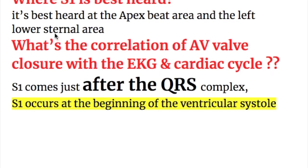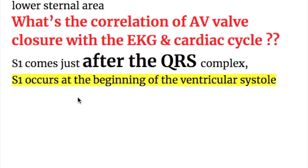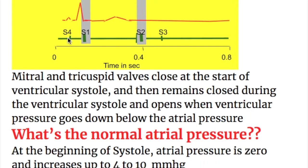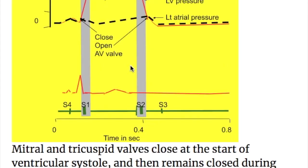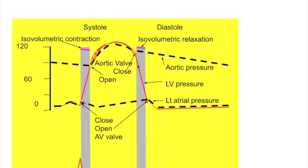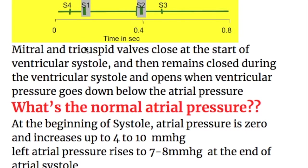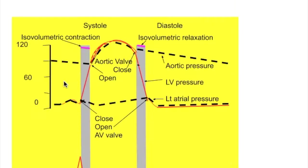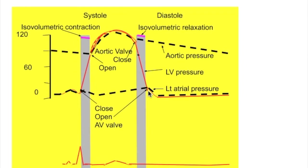The first heart sound is best heard at the apex area and the left lower sternal border area, which is also the tricuspid area. The first heart sound comes just after the QRS complex on the ECG, right at the start of ventricular contraction. The mitral and tricuspid valves close at the start of ventricular systole and remain closed during isovolumetric contraction. They open when ventricular pressure goes down below atrial pressure at the end of ventricular diastole.